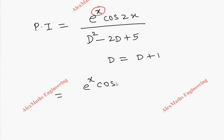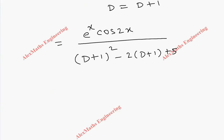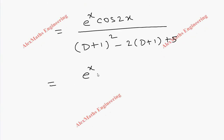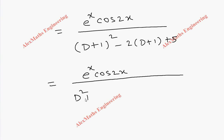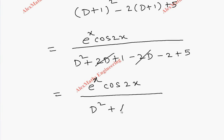Wherever D appears, we put D plus 1. So we get e^x times cos(2x) divided by (D+1)² minus 2(D+1) plus 5. Expanding: D² plus 2D plus 1 minus 2D minus 2 plus 5. The 2D terms cancel, and the remaining denominator simplifies to D² plus 4.